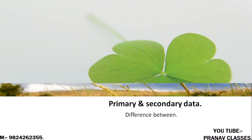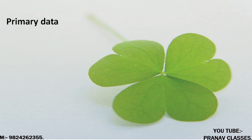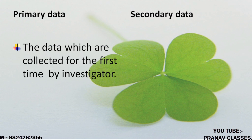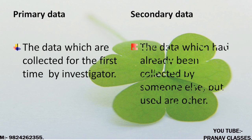There are two types of data. First is primary and second is secondary. The data which are collected for the first time by an investigator is known as primary data. The data which had already been collected by somebody else but used by another person is secondary data.